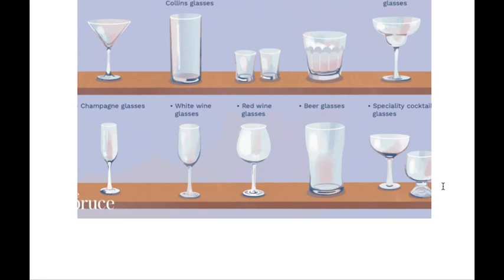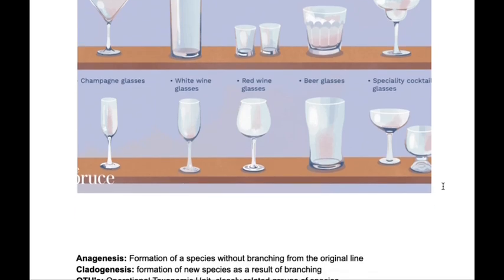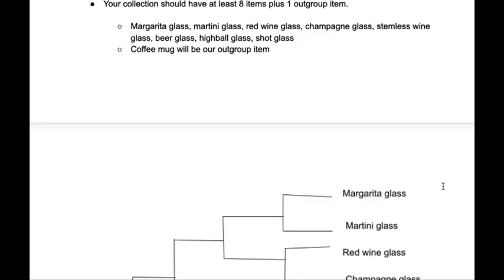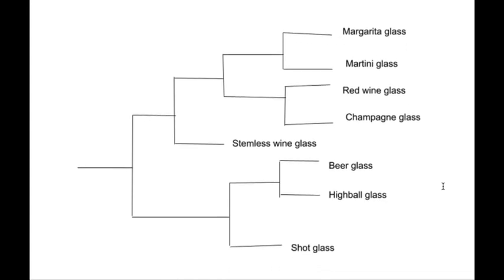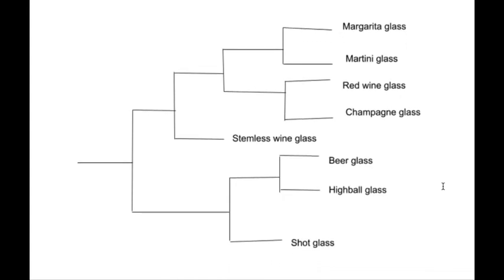The bottom part of our phylogenetic tree has beer glass, highball glass, and shot glass. All of these are not rounded and don't have a stem, which keeps them related. But the shot glass is the smallest, which makes it the most unrelated, while beer glass and highball glass are the most similar, which is why they are grouped together.